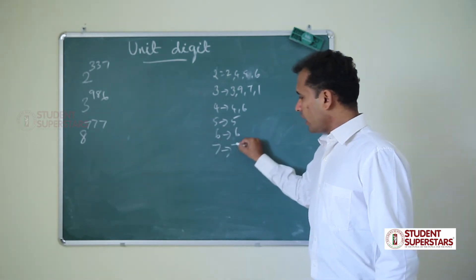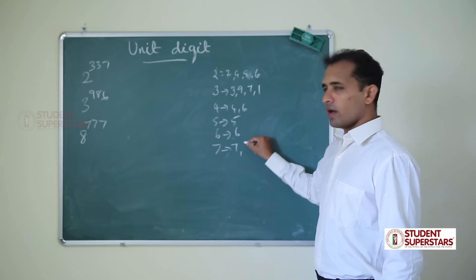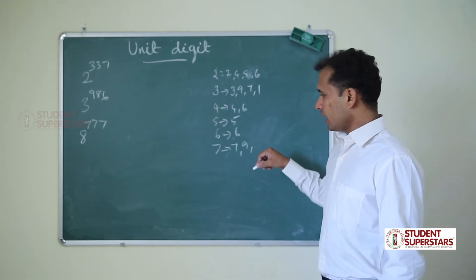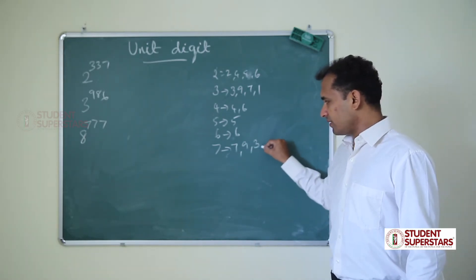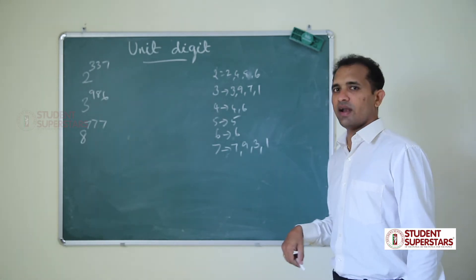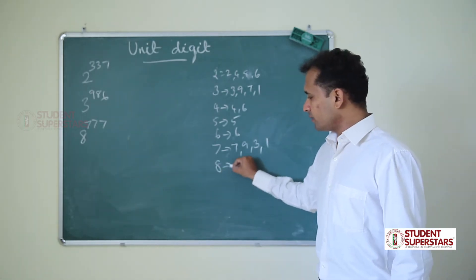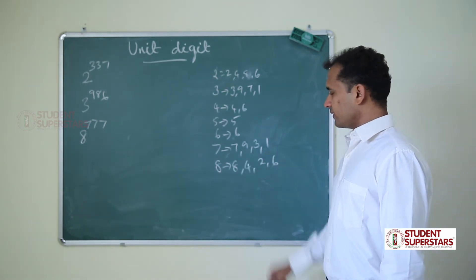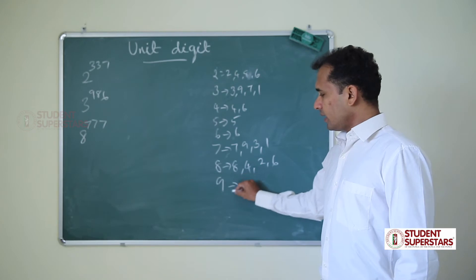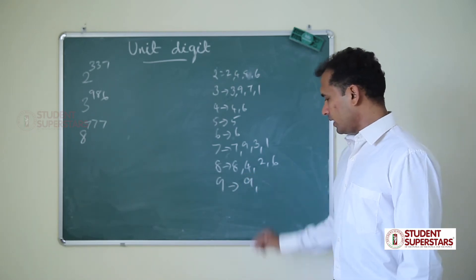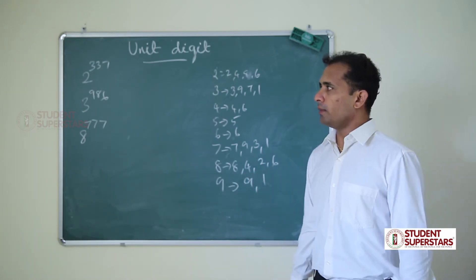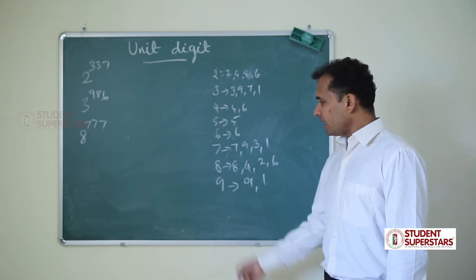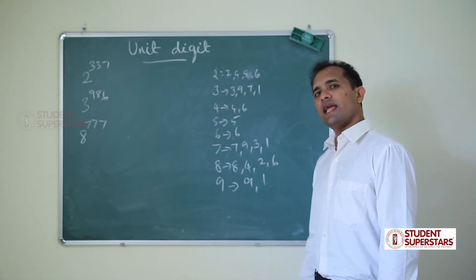7 power 1 is 7, 7 square is 49 so 9, 7 power 3 is 343 so 3, and 1. So 7, 9, 3, 1. For 8: 8, 4, 2 and 6. For 9: 9 power odd number is 9, even number is 1. So now we can find the unit digit of any value.